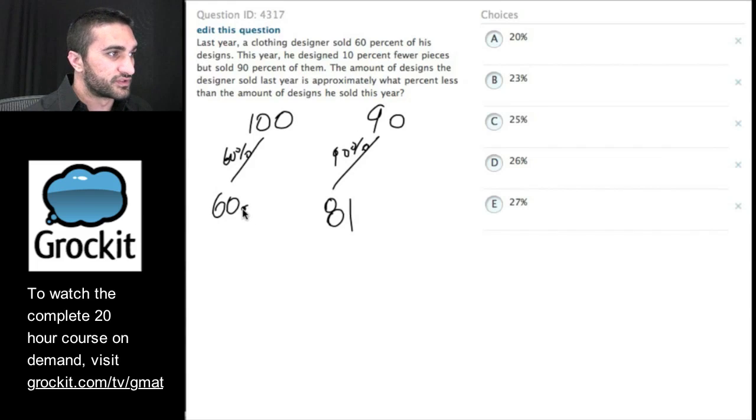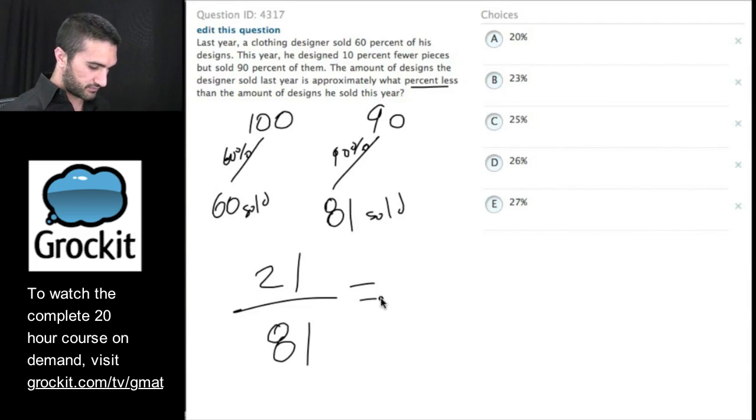So it was 60 sold last year, 81 sold this year. The amount of designs the designer sold last year is approximately what percent less than the amount of designs he sold this year? And we learned earlier that the percent change is the difference over the original. And this is where this question is trying to trip us up even further. We've got to remember that percent change is difference over original. We've got to remember what the original is here. They're looking for a percent less. 81 is the original. The difference is 81 minus 60 is 21. And the original is 81. And if we reduce these, any help on this one, Jay?